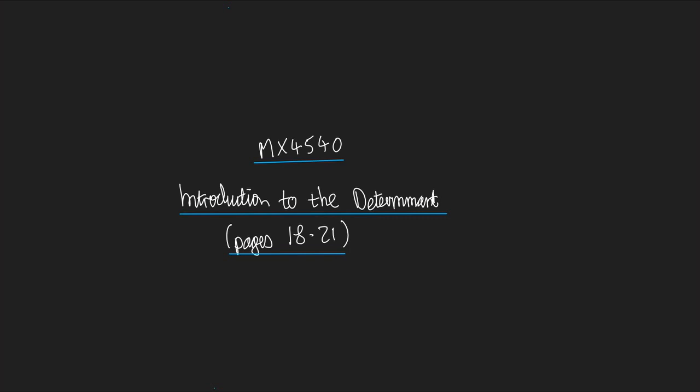For example, the determinant of the trefoil is three, the determinant of the figure eight is five. Three is not equal to five, so the trefoil and the figure eight are not equivalent.